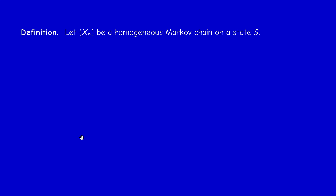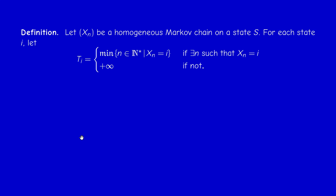If you have a homogeneous Markov chain on a state space S, for each state i in S, we denote by T sub i the smallest integer n greater than or equal to 1 for which X of n equals i, if this set is not empty. If this set is empty, we set T_i to be plus infinity.